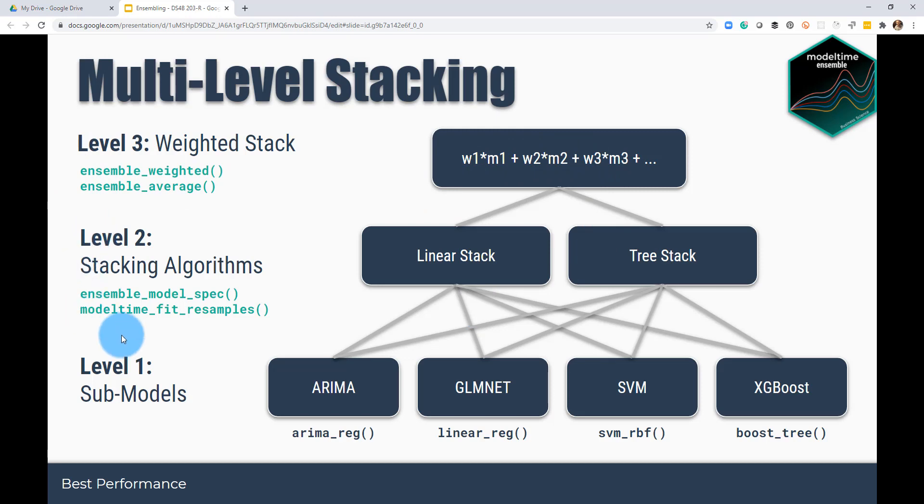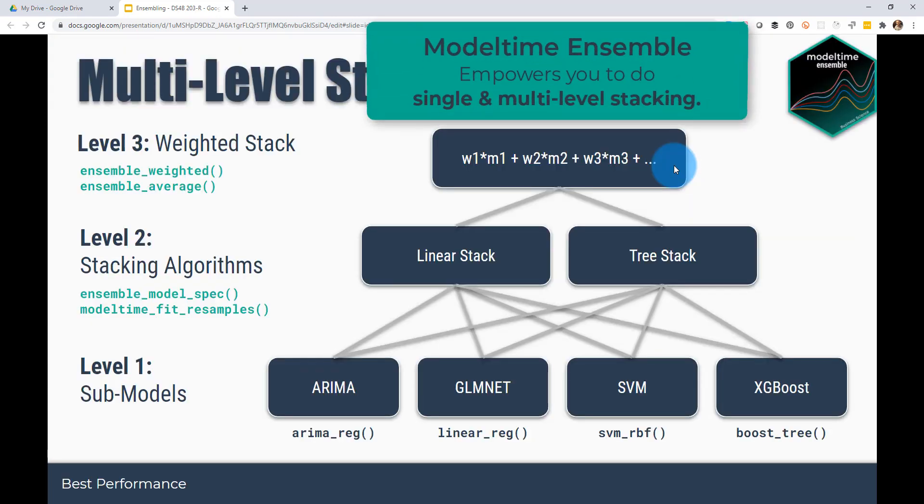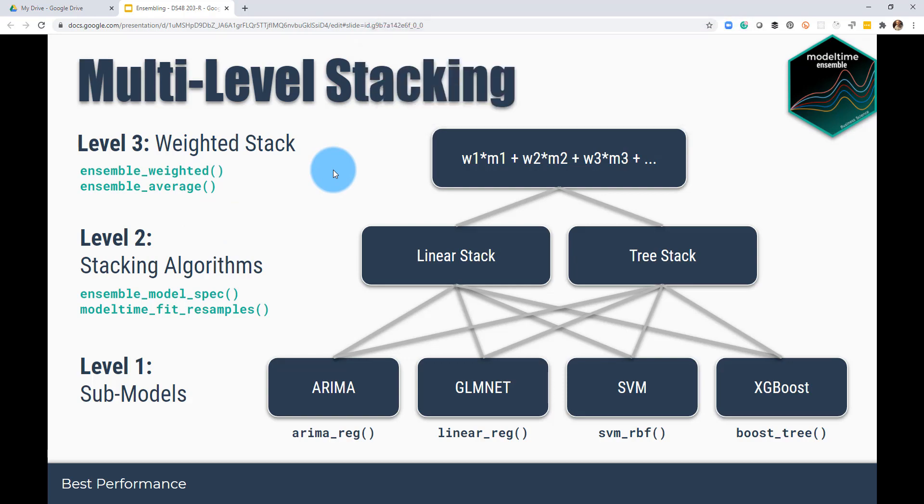And that is what won this Grupo Bimbo inventory demand competition. You can see that the picture is almost identical. So where they've got level one, they've got a bunch of different models down here that feed level two, where you've got different models here that are your stacking. And then level three is your weighting. So that is what model time ensemble allows you to do is to not only stop at your level two, but continue on to do a level three stacking. And this is what we'll be covering in this part of the course.